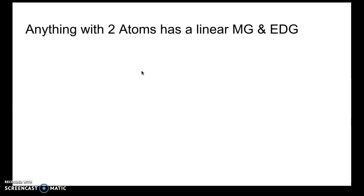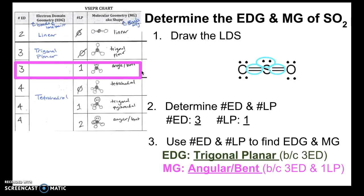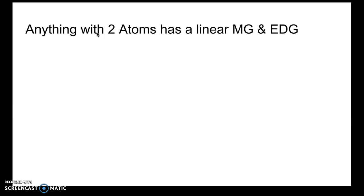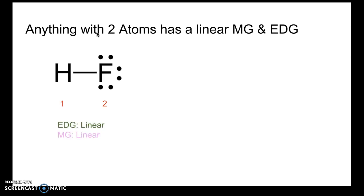One final note: the chart is not 100% complete. We're missing rows for three electron domains with two lone pairs, four electron domains with three lone pairs, and one electron domain. All of those missing structures have two atoms, and anything with two atoms will always have a linear molecular geometry and electron domain geometry. For example, HF has two atoms — its electron domain geometry and molecular geometry are both linear. N2 also has two atoms, so both its geometries are linear.